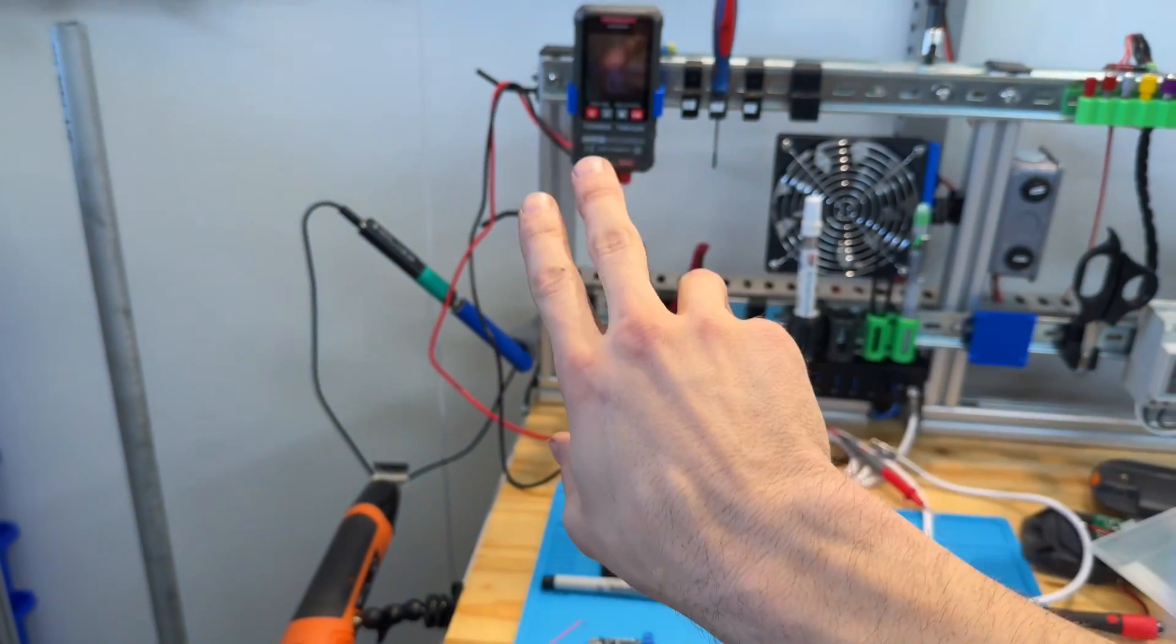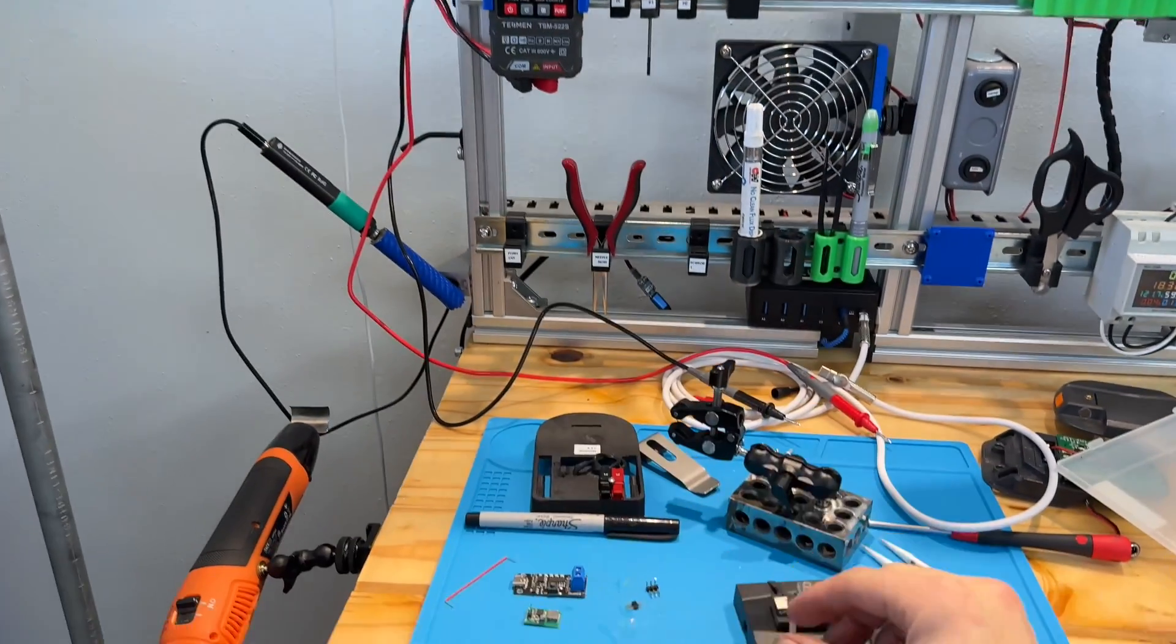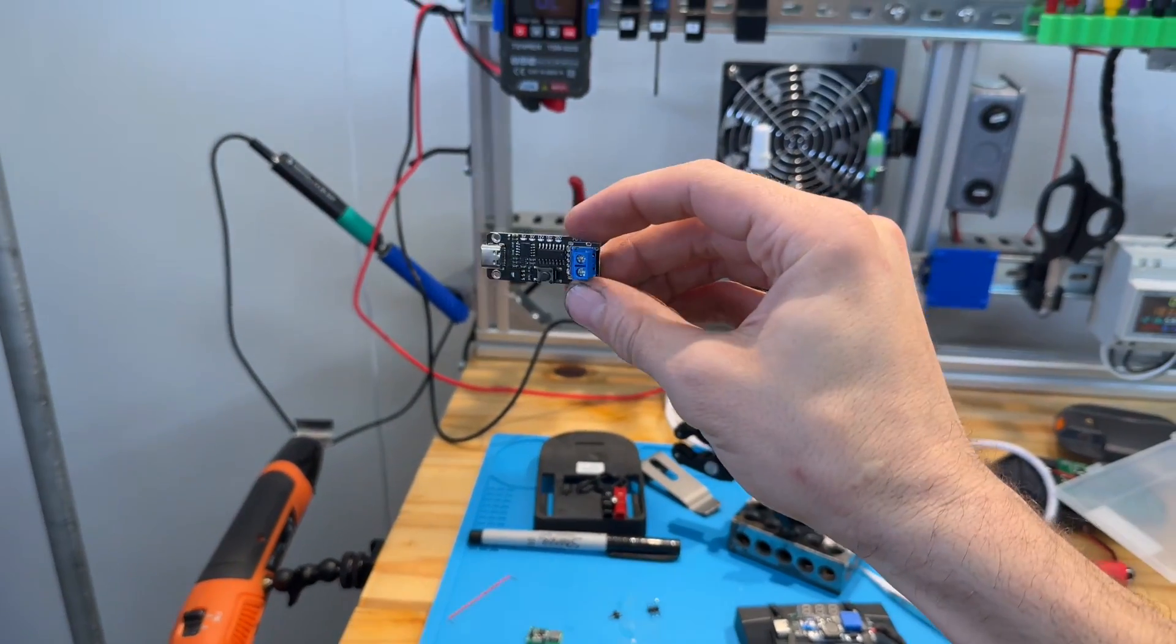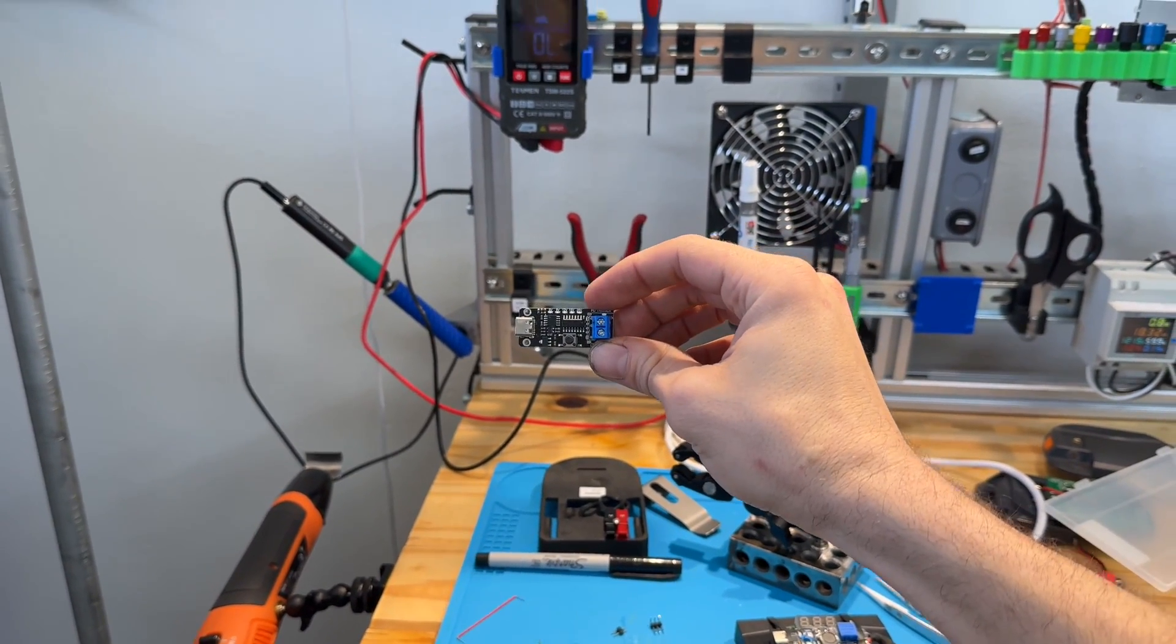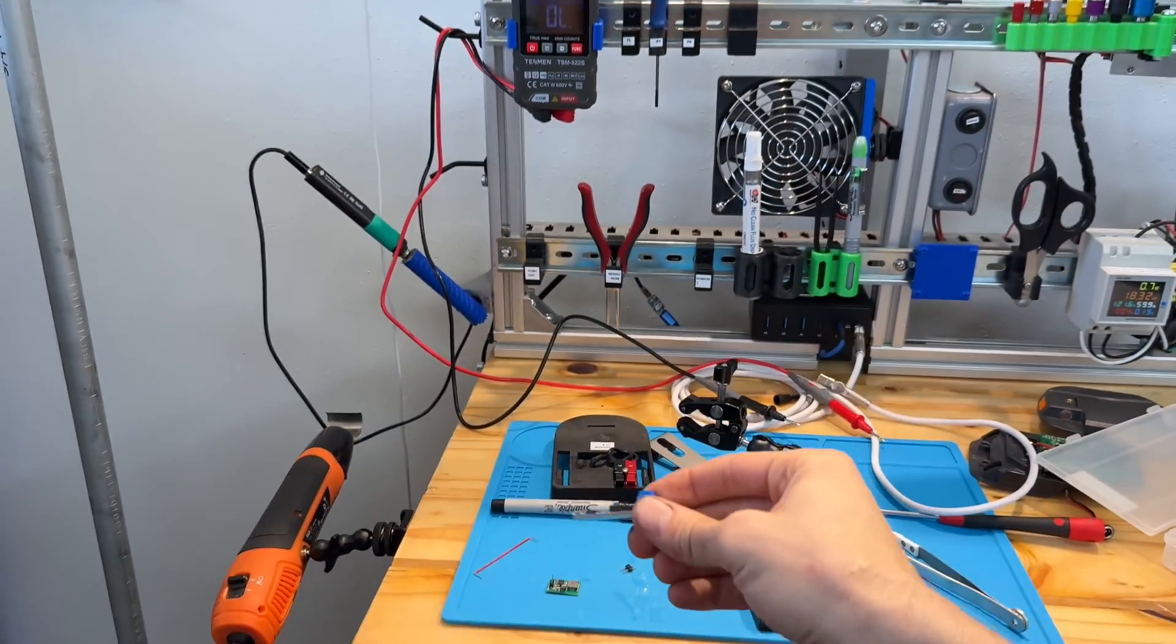This might be a little bit messy, but we're going to use this to measure something about our PD trigger board. We're going to build a gadget that makes 12 volts and 5 volts together, both of them available at the same time.